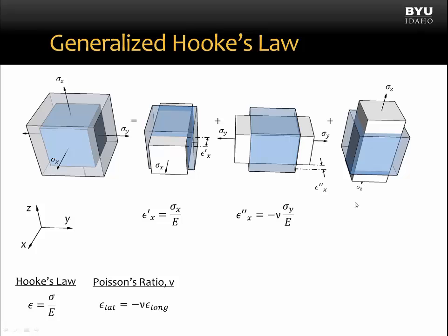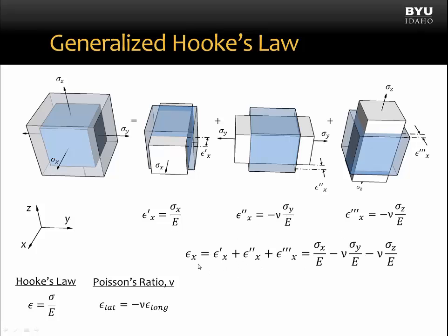When we consider the strain in the X direction from our stress in the Z direction, it looks like this. Once again, this is a lateral strain — it is a negative strain. It will be equal to Poisson's ratio times the longitudinal strain in the Z direction, which we can rewrite using Hooke's Law. We can then combine these three equations to get an expression for strain in the X direction considering stresses in the X, Y, and Z directions.